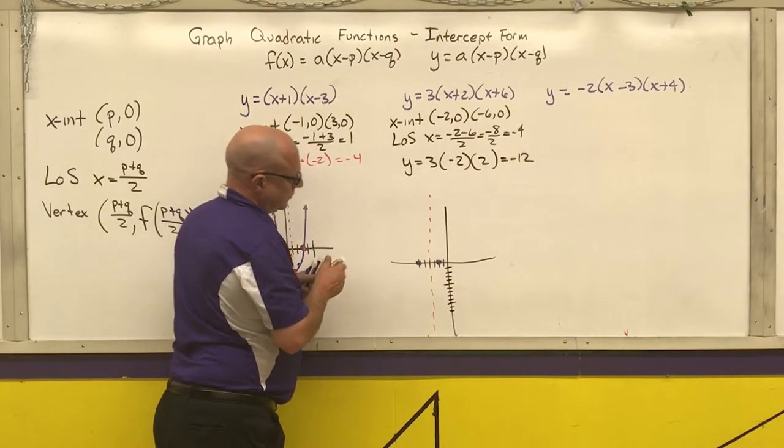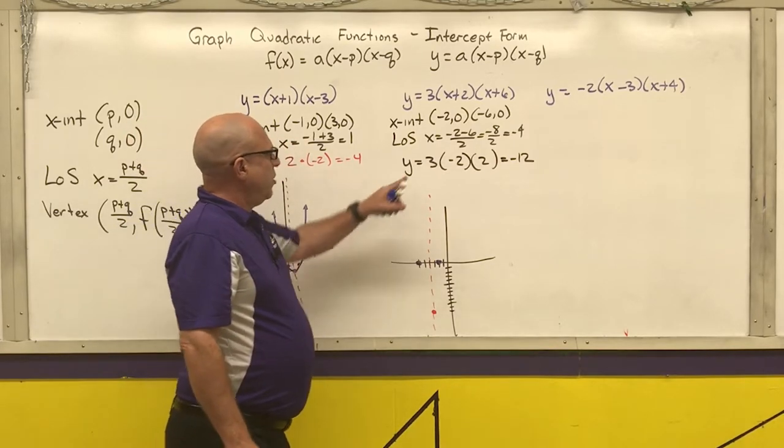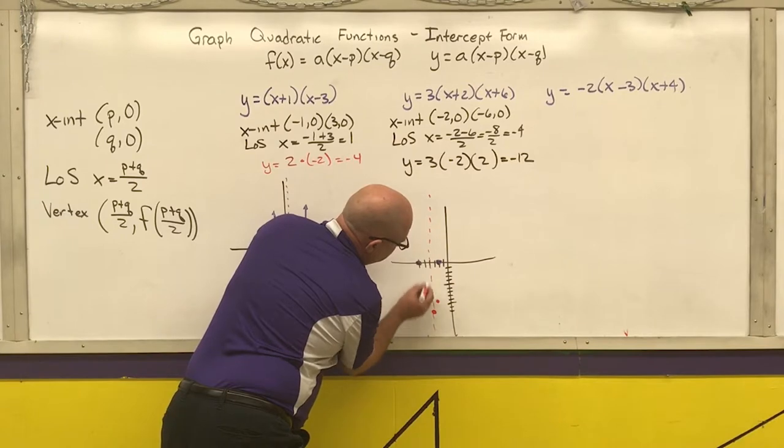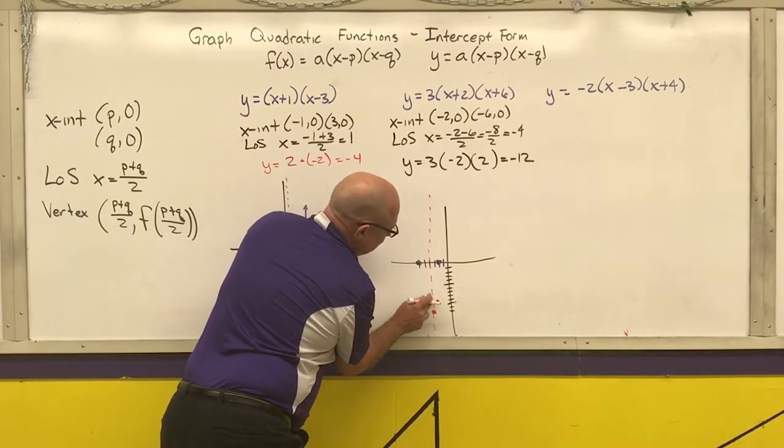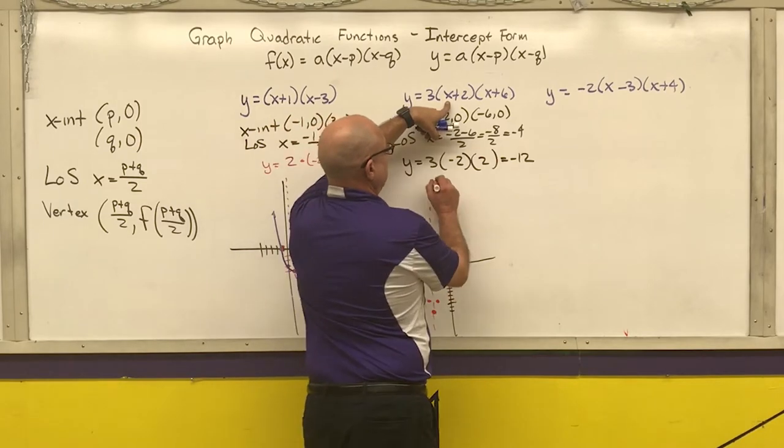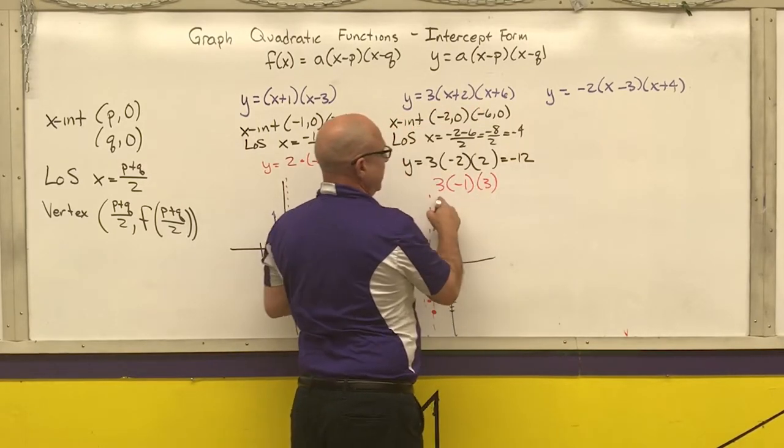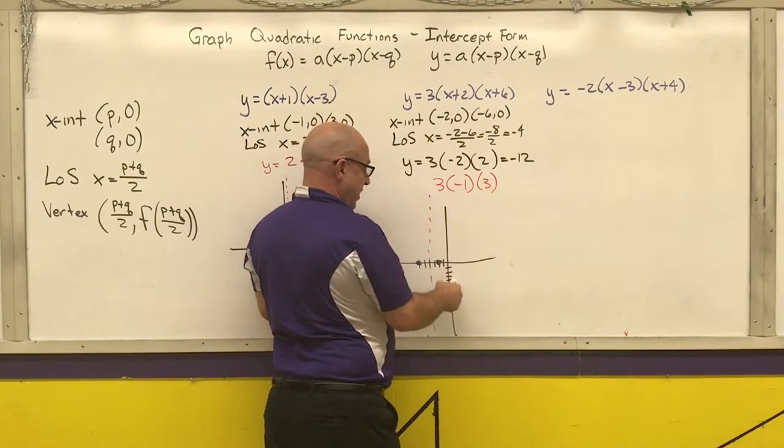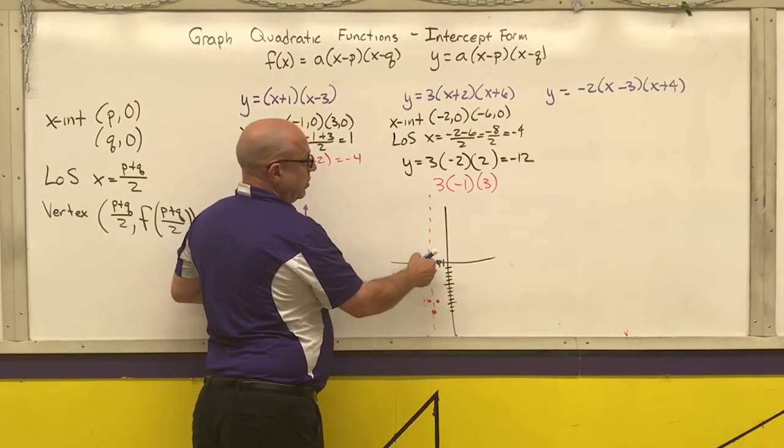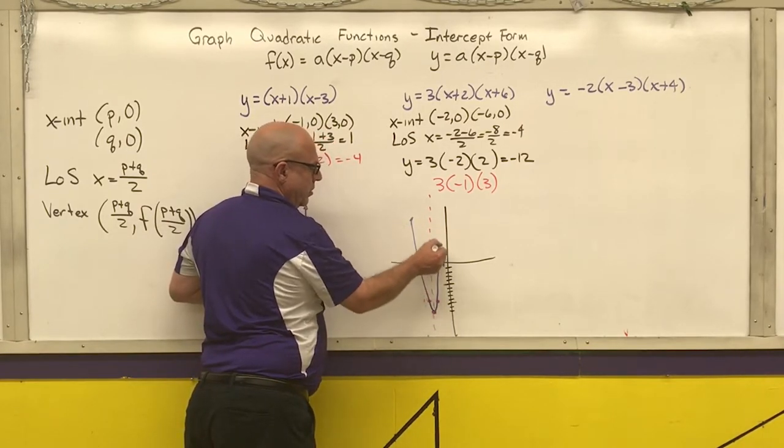On the line of symmetry. And here, I'm going to go over 1 from my vertex and up 3. I'm going to go over 1 and up to the negative 9 area. If you don't trust that, put another number in here. So I'm going to put the negative 3 into this function. Negative 3 plus 2 is negative 1. Negative 3 plus 6 is 3. 3 times negative 1 is negative 3. Times 3 is negative 9. So the graph of my function has a vertex at negative 4, negative 12, opening up, going through our x-intercepts.